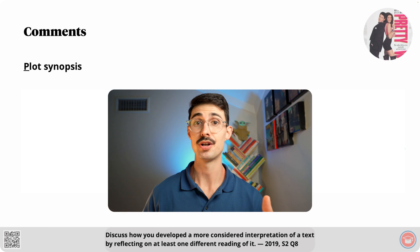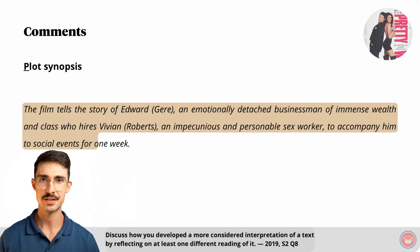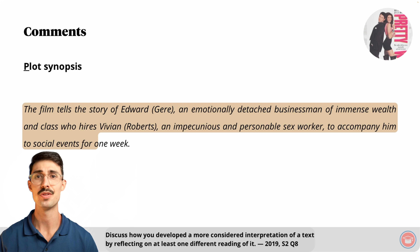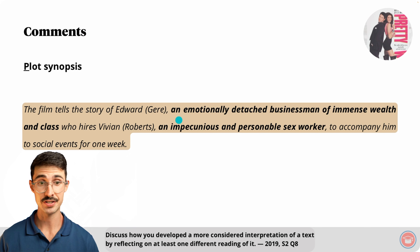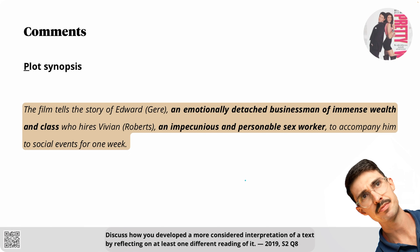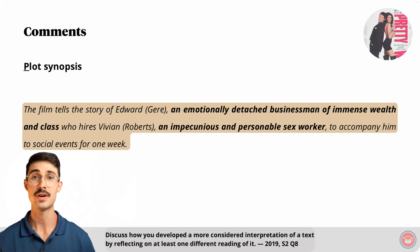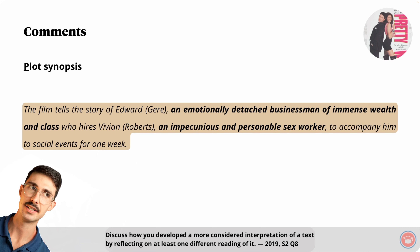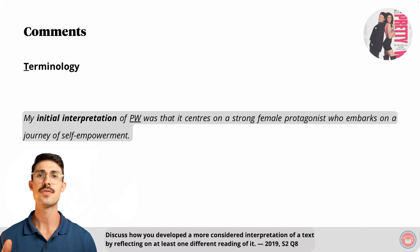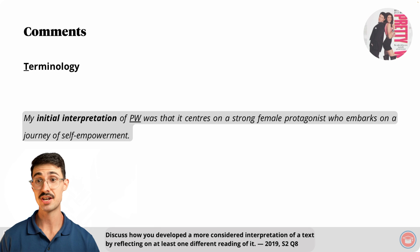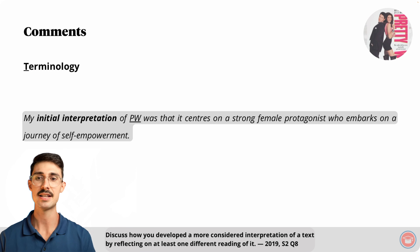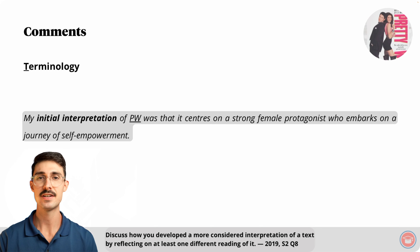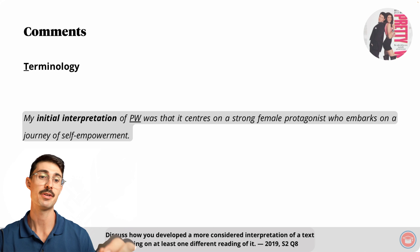Moving from the transition to text to the plot synopsis element. My plot synopsis is one sentence long and gives enough information for the marker to know what the movie is about. Notice how the sentence highlights the superficial differences between each main character: an emotionally detached businessman of immense wealth and class versus an impecunious and personable sex worker. Impecunious just means poor. These parts of the plot synopsis immediately tell the reader that the two main characters are opposites, at least on the surface. The next element is the terminology one. I can't have a more considered interpretation without having an original interpretation, so the phrase 'more considered interpretation' in the question implies you need to state what your original interpretation is. This is a perfect example of something well suited to the terminology element — a term that's ambiguous in the question and requires clarification at the outset.